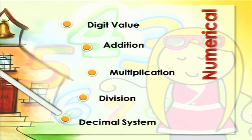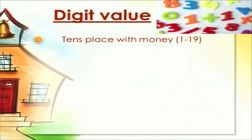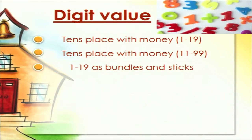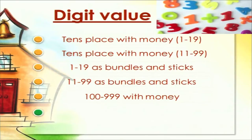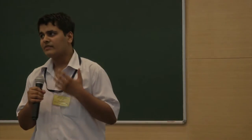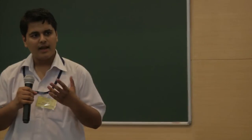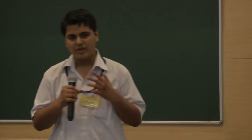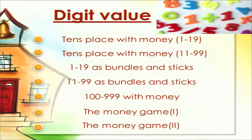The first module is digit value, which introduces the concept of place value in mathematics. We have made several illustrative activities using bundles, sticks, coins and money. Teaching through coins and notes is particularly innovative because every student at the elementary level recognizes a 1 rupee coin or a 10 rupee note and knows that a 10 rupee note equals 10 one-rupee coins. We have activities for tens place with money and with bundles and sticks, and two test modes wherein the student can test his understanding. Each test mode has four levels.